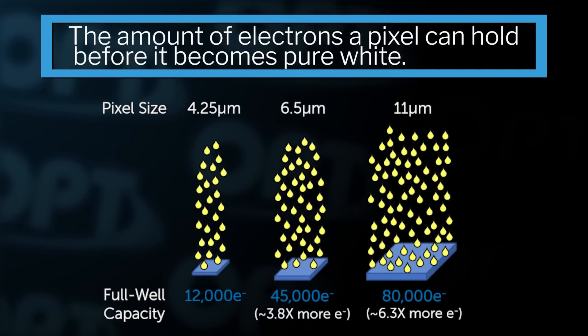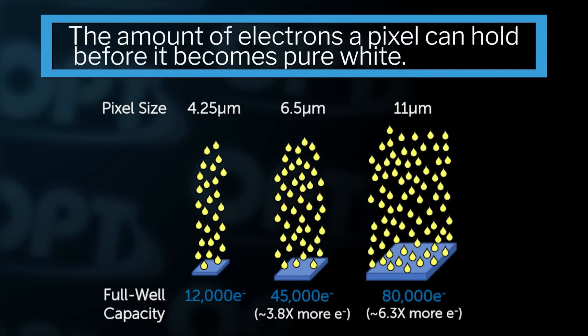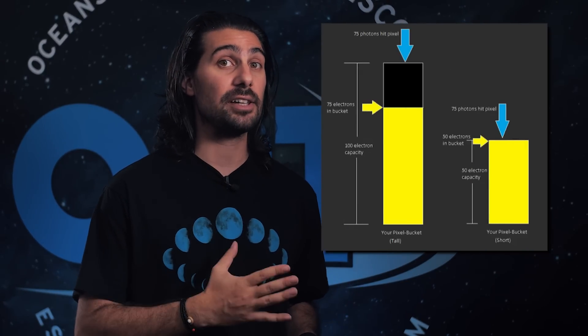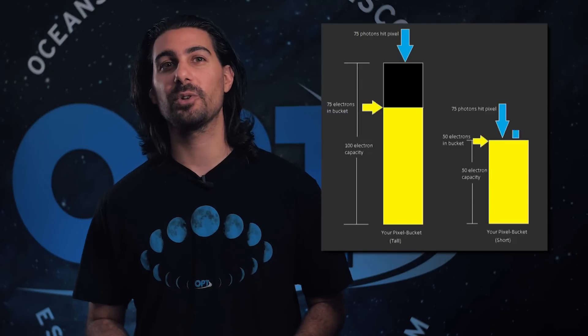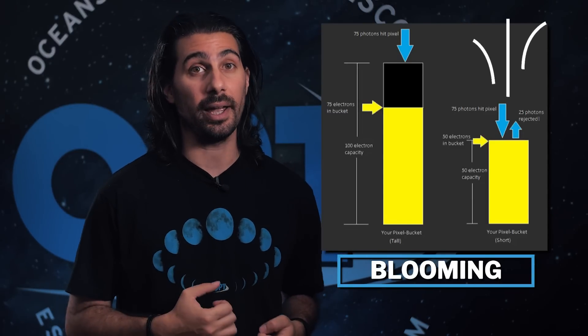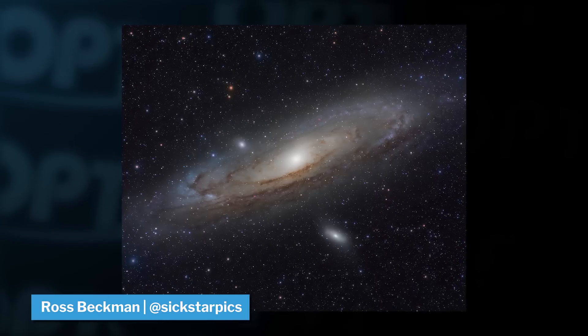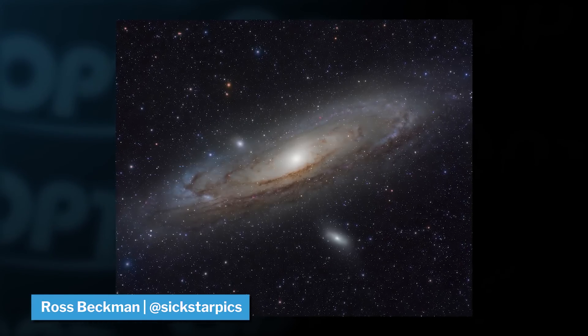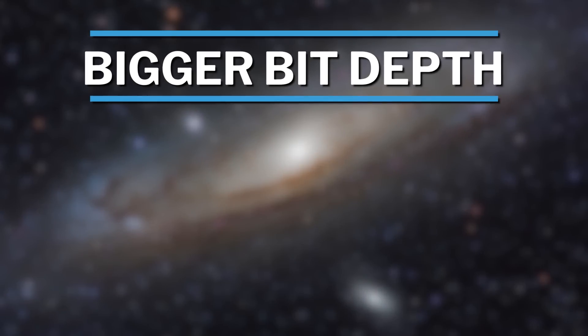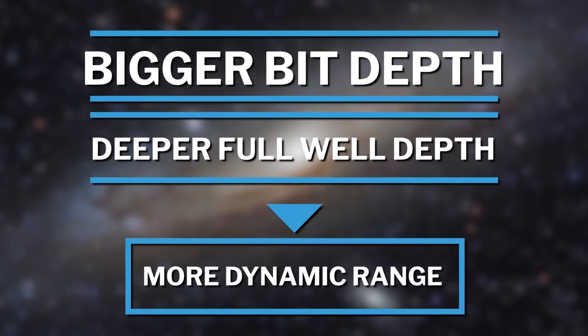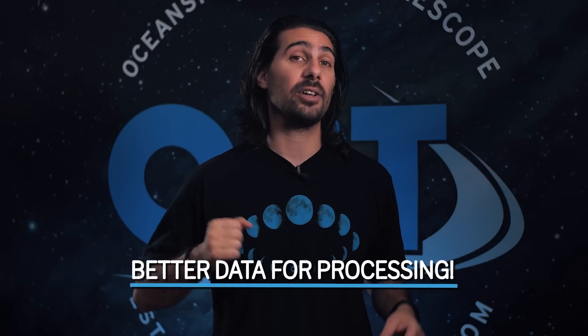Let's talk about full well depth. It's related to but different from bit depth. Full well depth is basically the number of electrons of light that can fill each pixel before it becomes full white. A deeper full well depth stops you from blowing out your image — when a pixel well fills up, extra photons spill into adjacent pixels, which is called blooming, making stars look bloated and overexposed. Having a deeper full well depth helps you preserve star colors and avoid blowing out bright areas like the core of galaxies. With bigger bit depth and deeper full well depth together, you get much bigger dynamic range, and the bigger the dynamic range, the better your final images.